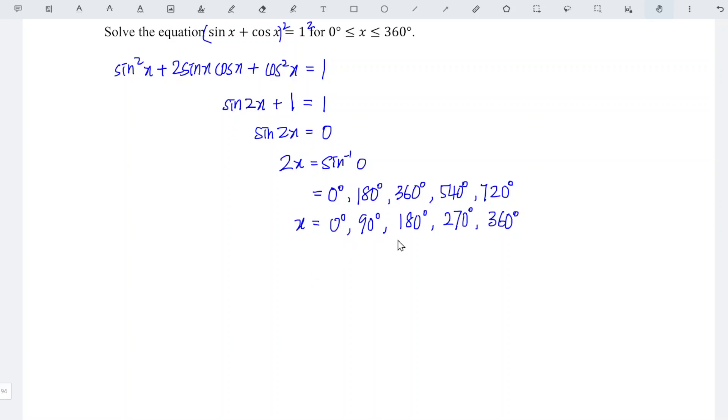When we substitute the angles into the equation given by the question, we realize that two values result in -1, which we should reject. This happened because we applied squaring initially, which means the answer for this question is only 0°, 90°, and 360°.